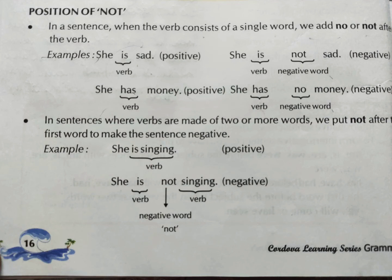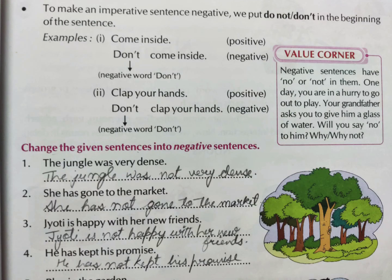In sentences which have two verbs, you put 'not' after the first verb. For example, 'She is singing' becomes 'She is not singing.' Both 'is' and 'singing' are verbs, so 'not' goes after the first one.